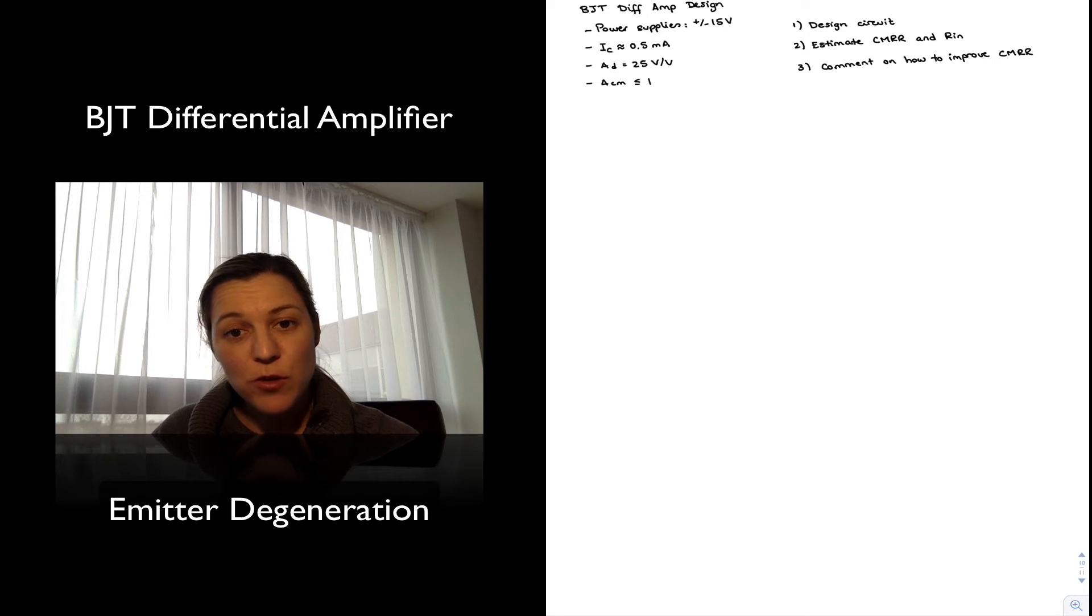And we are going to do three things. First, we are going to design the circuit to these specifications. Then we are going to estimate the common mode rejection ratio as well as the differential input resistance RID. And then we are going to comment on how we can improve the common mode rejection ratio once we have estimated this value.